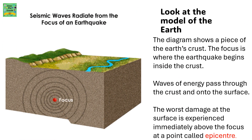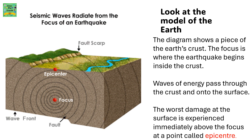Seismic waves radiate from the focus of an earthquake. Look at the model of the earth — the diagram shows a piece of the earth's crust. The focus is where the earthquake begins inside the crust. Waves of energy pass through the crust and onto the surface, and the worst damage at the surface is experienced immediately above the focus, at a point called the epicenter.